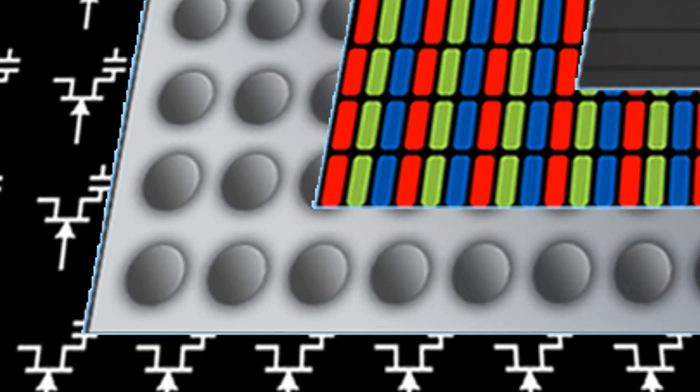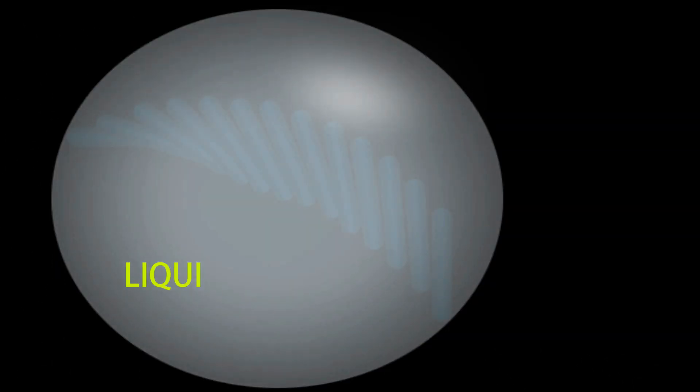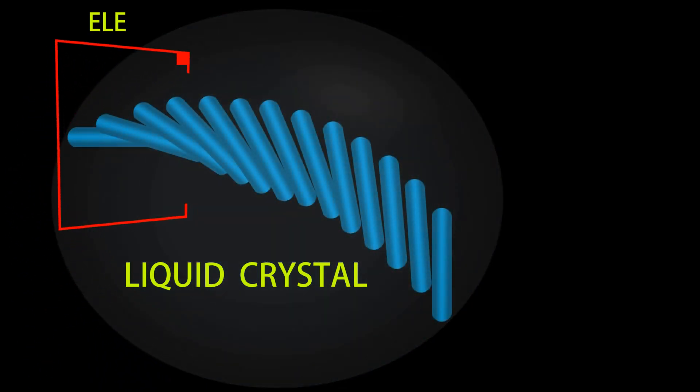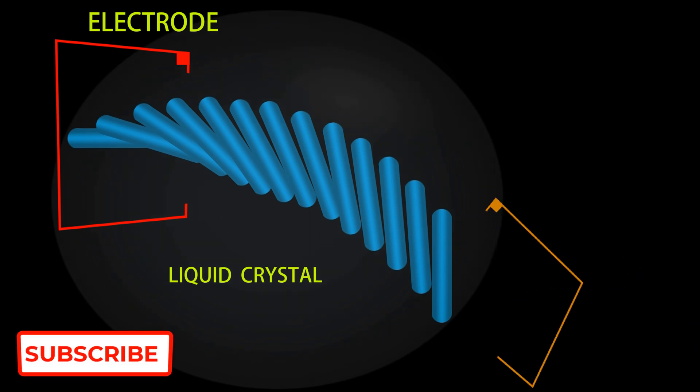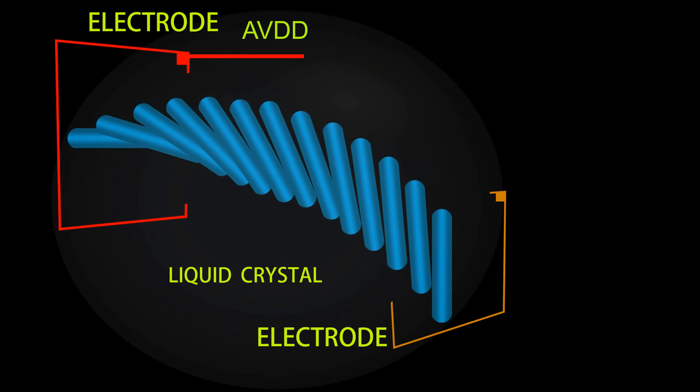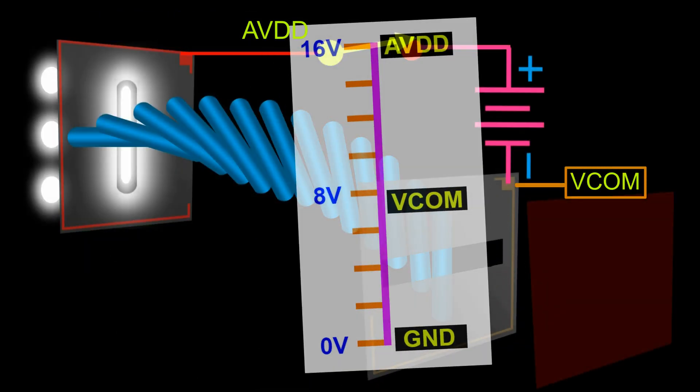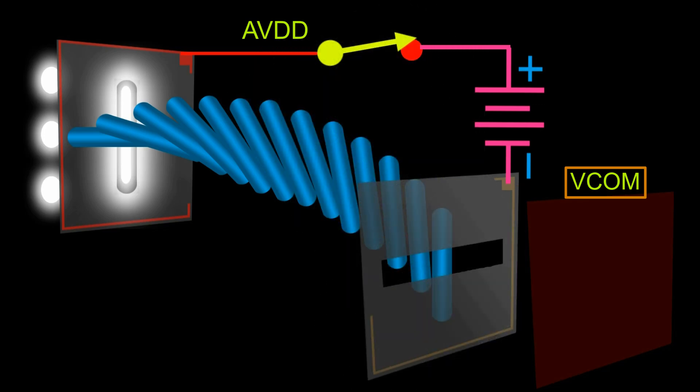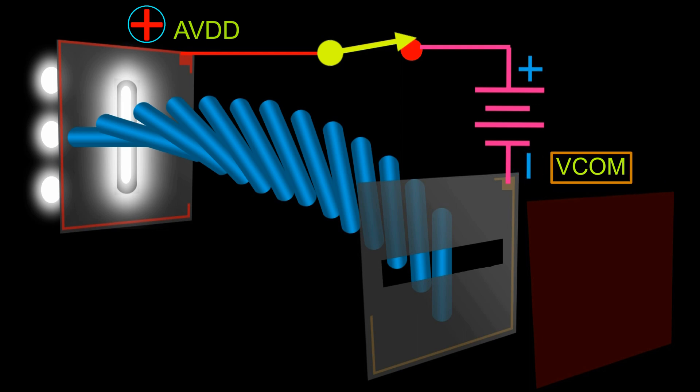Now we try to understand how this liquid crystal produce image on the screen. This is positive electrode of liquid crystal and this is negative electrode. The connection here is AVDD and here is VCOM supply. There is a potential difference between AVDD and VCOM. In the liquid crystal cell, the positive supply comes from AVDD and the negative supply comes from VCOM. Now we see what happens when we apply power to a liquid crystal cell.